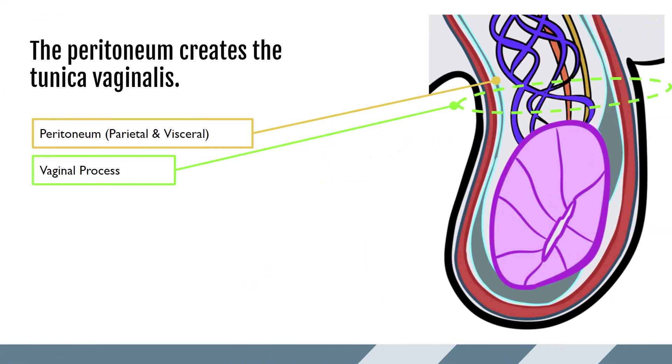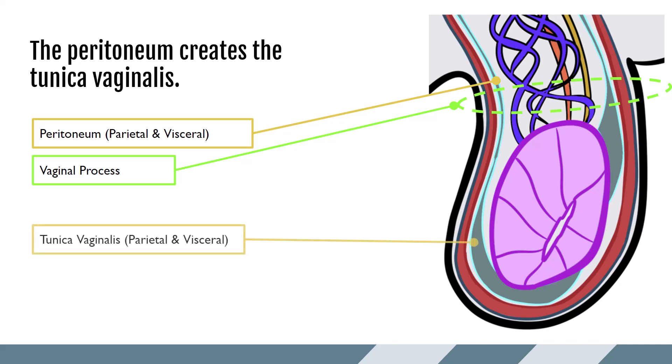It's the same idea with the peritoneum. Inside the abdomen, the peritoneum is a two-layered covering, and as it passes through the vaginal process, it will become the tunica vaginalis, also with two layers.